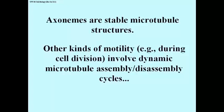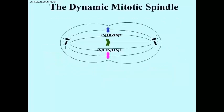The movement of chromosomes during mitosis involves a dynamic microtubule that involves assembly and disassembly cycles. Let's take a look at the dynamic mitotic spindle.